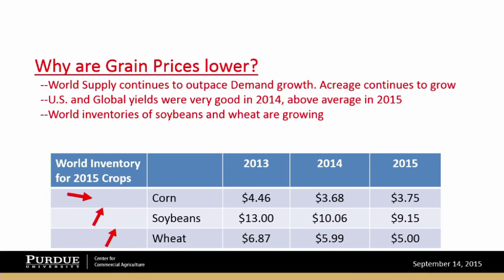Acreage globally is continuing to grow, and U.S. and global yields in 2015 were very good, following 2014, which was an extremely good year. We're seeing world inventories for soybeans and wheat go up. For corn, soybeans, and wheat globally, as supplies have grown, prices have gotten weaker — corn moved from $4.46 in 2013 to $3.75 in 2015, soybeans dropped from $13 a bushel to $9.15, and wheat from $6.87 to $5 a bushel.